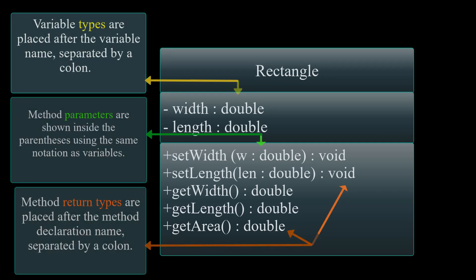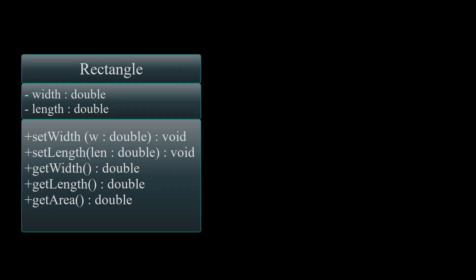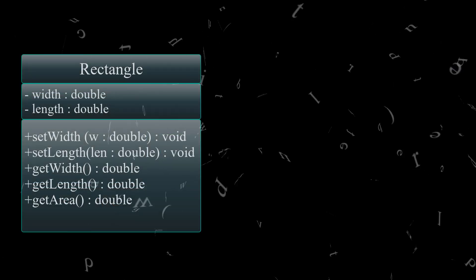Variable types are placed after the variable name, separated by a colon. Method parameters are shown inside the parentheses using the same notation as variables. Method return types are placed after the method declaration name, separated by a colon. Now that we know the components, let's translate this UML Diagram into a class file.